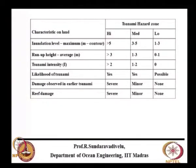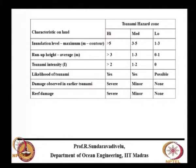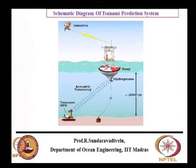Tsunami hazard is differentiated into high, medium, and low depending on inundation level, run-up height, tsunami intensity, likelihood of tsunami, damage observed in earlier tsunamis, and reef damage. You can classify different locations on the Indian coast as high, medium, or low risk. Inundation level about 5 meters, run-up height 3 meters, and a tsunami intensity factor of 2 are used in this classification.